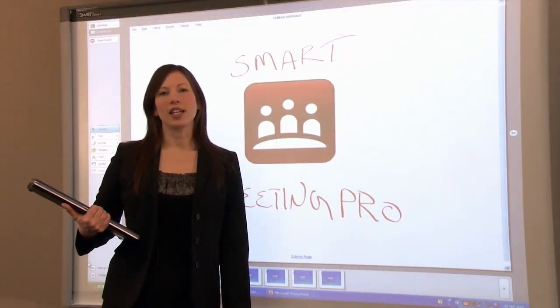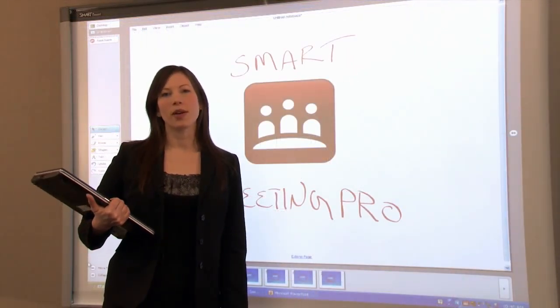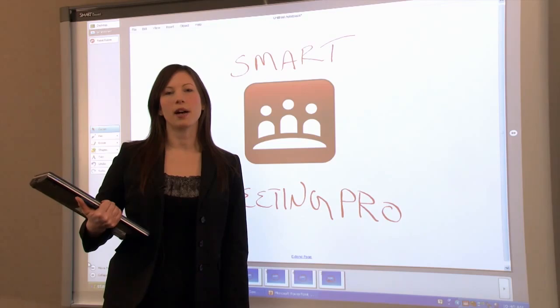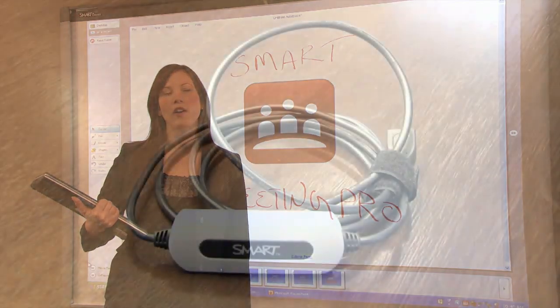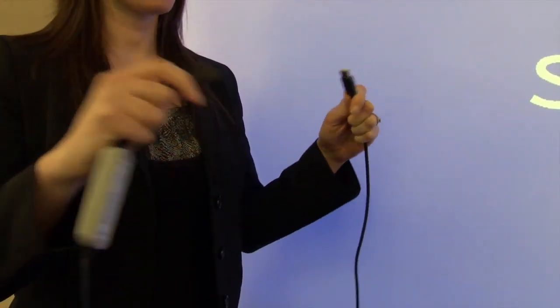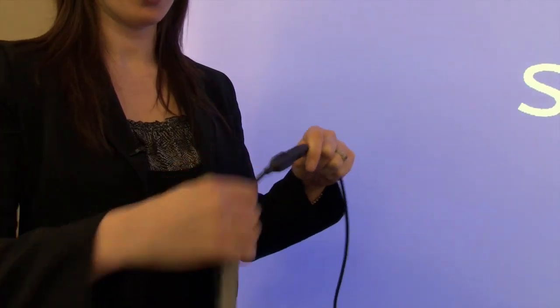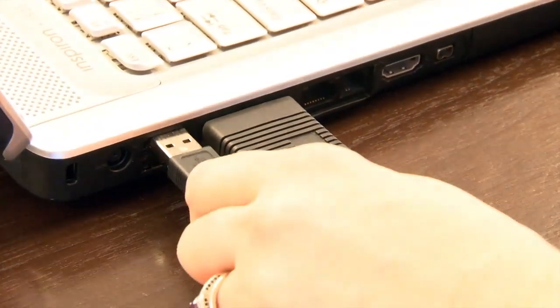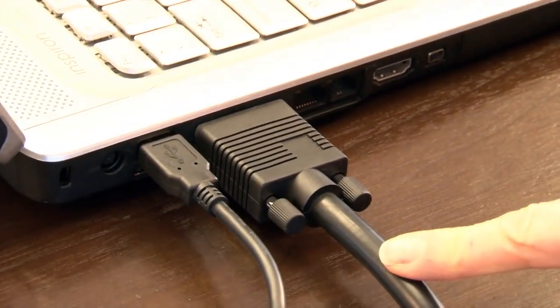If you bring your laptop to your meeting, you can still take advantage of Smart Meeting Pro capabilities with the files on your laptop using the Smart GoWire auto-launch cable. It allows you to run Smart Meeting Pro software on your laptop without having to install it. You just connect the GoWire to the interactive whiteboard, and the other end to your laptop. The video cable is already connected.